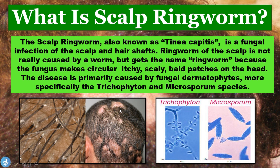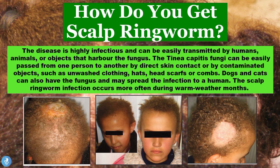Now let's take a closer look at how one can contract this disease. The disease is actually highly infectious and can be easily transmitted by humans, animals, or objects that harbour the fungus. The tinea capitis fungi can easily be passed from one person to another by direct skin contact or by contaminated objects such as unwashed clothing, hats, headscarves, or even combs. Dogs and cats can also carry the fungus and may spread the infection to humans as well.